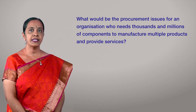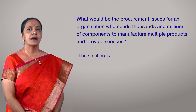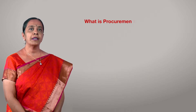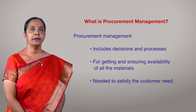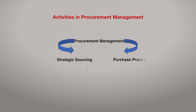If this is for a single event, imagine the procurement challenges for an organization that needs to buy thousands or millions of components to manufacture multiple products and provide services. The solution is a systematic procurement management system supported by supply chain infrastructure. Procurement management includes decisions and processes for getting and ensuring availability of all materials needed to satisfy customer needs, covering material identification, planning, make-or-buy decisions, supplier selection, relationship management, purchase activities, inbound transportation, and managing supplier quality.